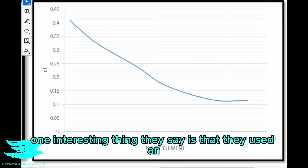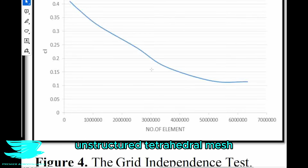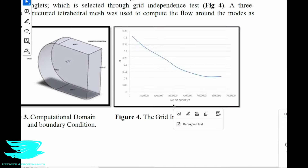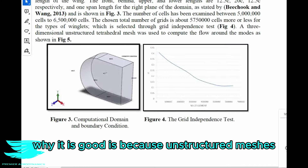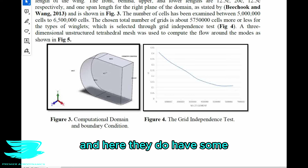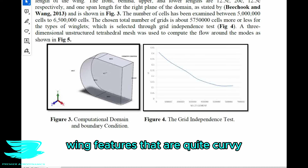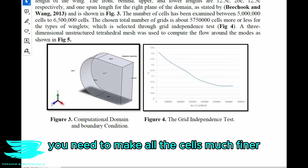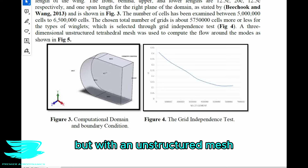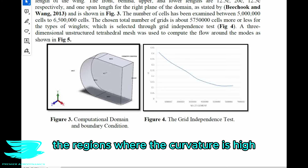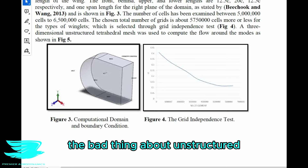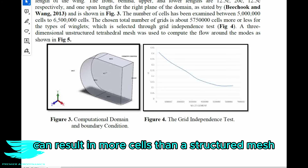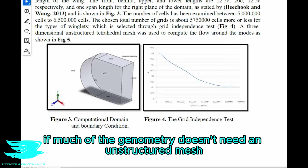One interesting thing they say is that they used an unstructured tetrahedral mesh. This is good and bad. Unstructured meshes are very good at resolving curves, and here they do have some wing features that are quite curvy — much better at this than structured meshes. To resolve a curve with a structured mesh, you need to make all of the cells much finer, but with an unstructured mesh you can use far fewer cells and only refine the regions where curvature is high.